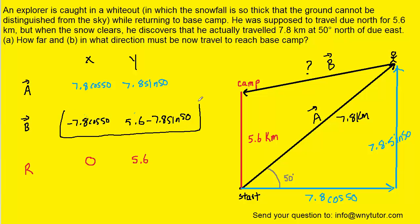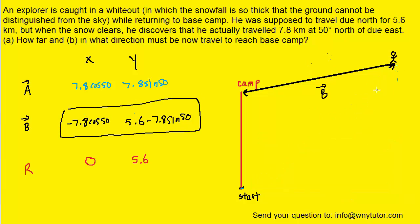So indeed, these are the two components for vector B. So if we come back to the drawing, we can see that the X component is negative 7.8 cosine of 50. Now, a negative X component means that we would have to travel to the left. So we would have a component pointing in this direction right here.